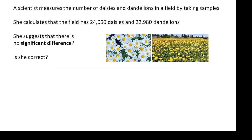A scientist measures the number of daisies and dandelions in a field by taking samples, and she calculates that the field has 24,050 daisies and 22,980 dandelions, and she suggests that there is no significant difference. Is she correct?